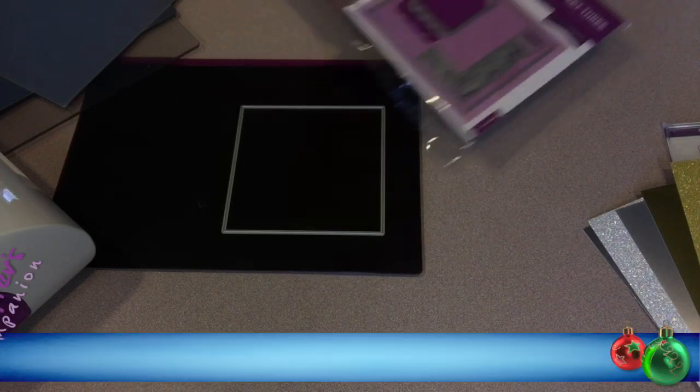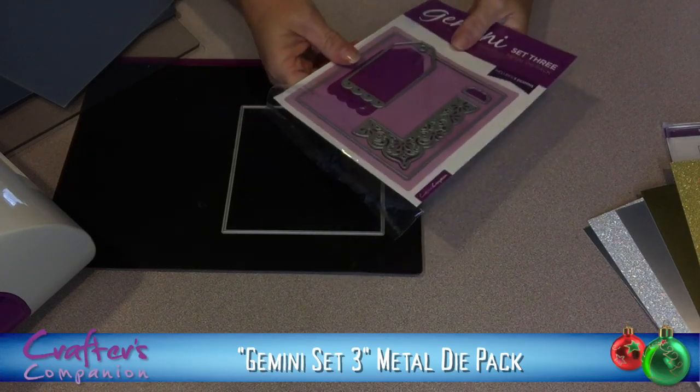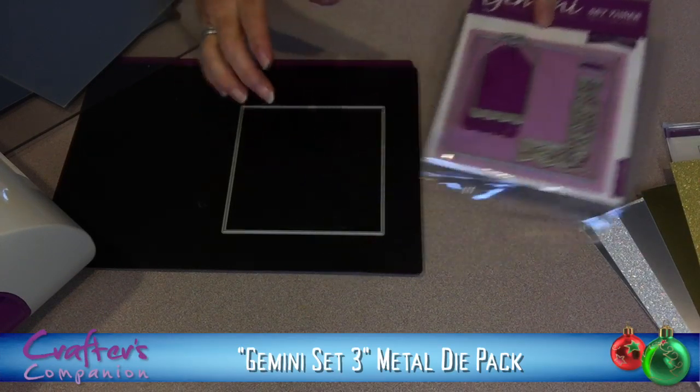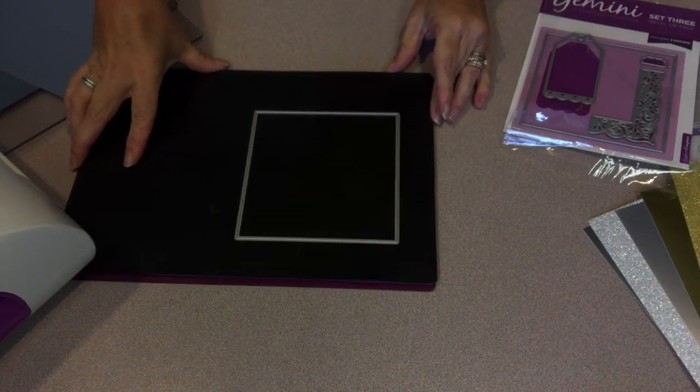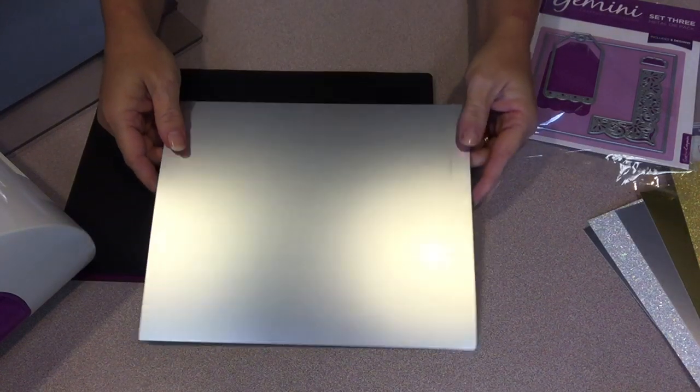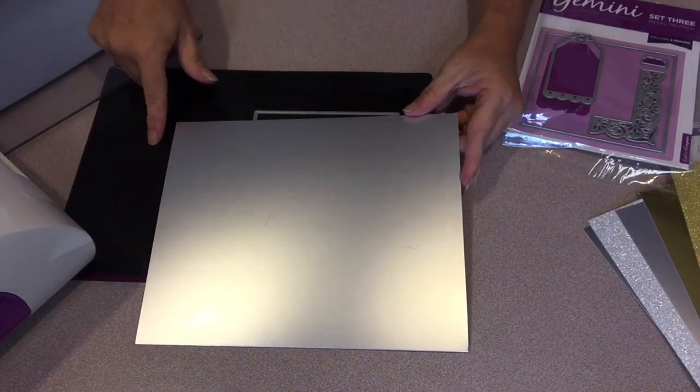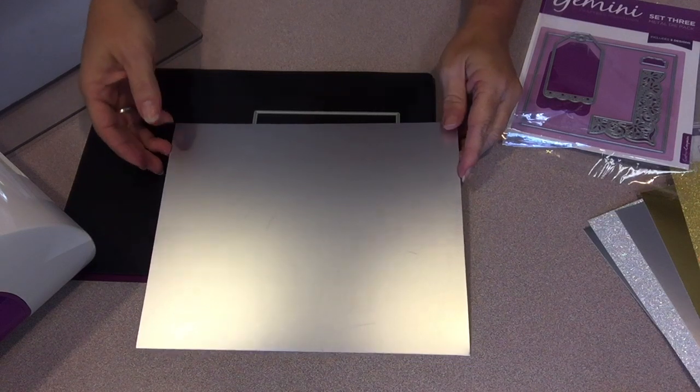To make the window in the photo mat, I'm going to be using the larger square from the Gemini Set 3 die set. That's going to place that photo opening in the middle of my cardstock. I did cut a piece of the silver mat cardstock to 8x10 so that it would fit in my frame.